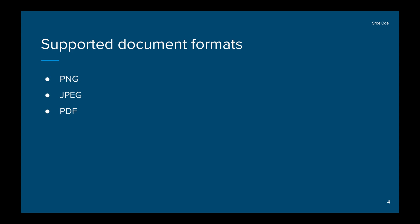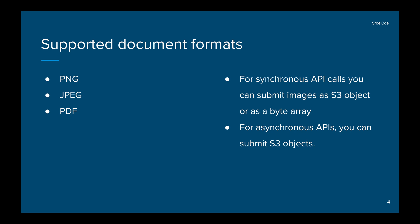Amazon Textract supports documents in PNG, JPEG, and PDF format. If you are making a synchronous API call, you can submit images as S3 objects or directly pass them as a byte array. For asynchronous API calls, you have to submit the file as an S3 object, meaning you need to upload the file to an S3 bucket for all asynchronous operations. So Textract supports two types of calls: synchronous and asynchronous.